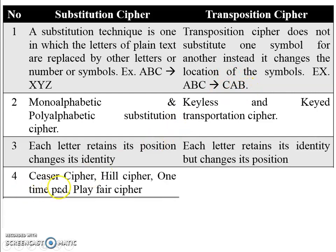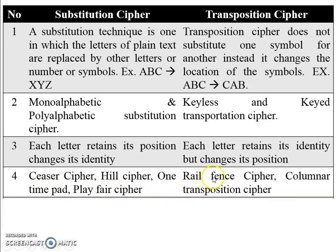Caesar cipher, Hill cipher, one-time pad, and Playfair cipher are types of substitution cipher. Rail fence cipher and columnar transposition cipher are types of transposition cipher. All of these cipher videos are available on my channel.